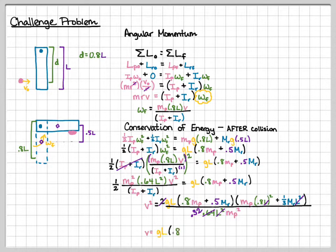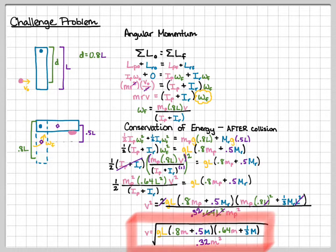V is equal to G times L times 0.8 m, little m, plus 0.5 big M, times 0.64 little m, plus 1 third big M, divided by 0.32 m squared. And then don't forget to take the square root. You don't want all your hard work to be wasted just because you forgot that.